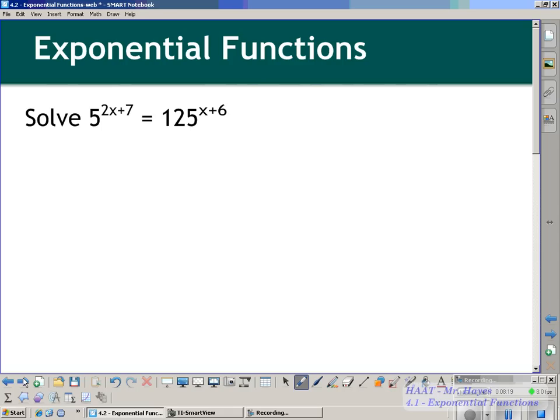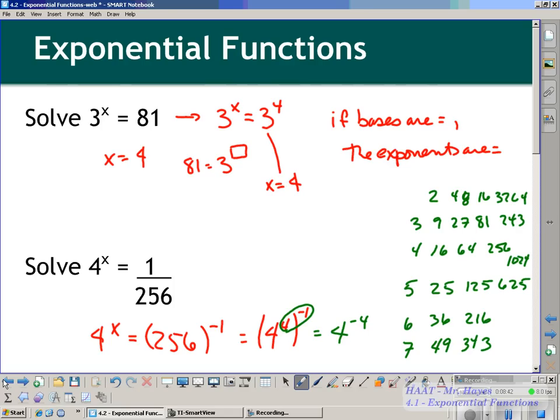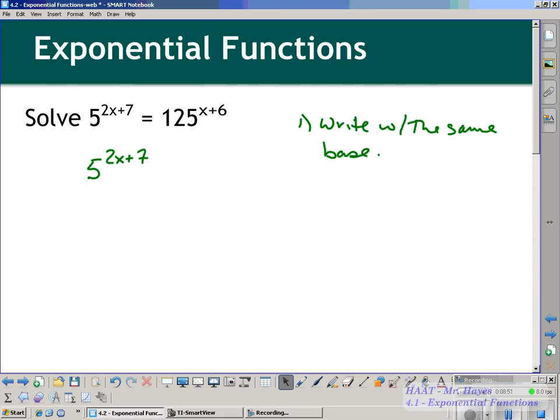So first of all, you have to ask yourself, okay, we need to write this as like bases. So write with the same base. I kind of said this before, but let's be explicitly clear. Now, what happens when you can't write them as the same base? That's called section 4.3. So 5 to the 2x plus 7. Now, again, because you have your list like that over here. Oh, look, 125 is on my 5s list. That is 5 to the 3rd.